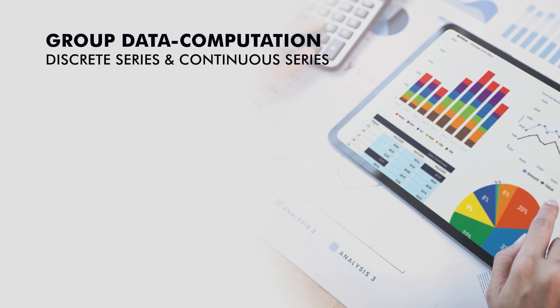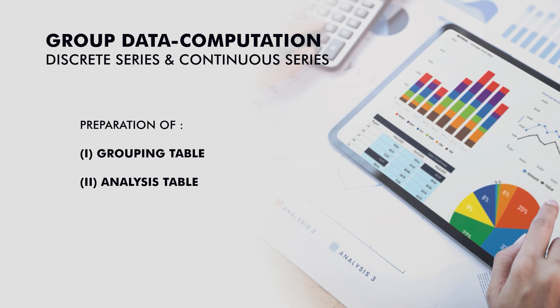Next, we discuss computation of mode for discrete series and continuous series. In discrete series, the variants take absolute values, and to identify the mode we need to prepare a grouping table followed by an analysis table, because simple inspection may not be reliable.